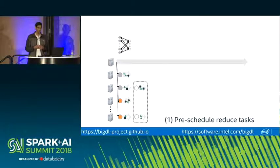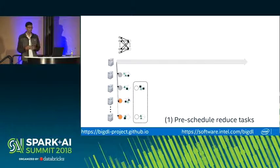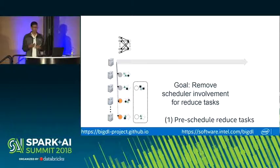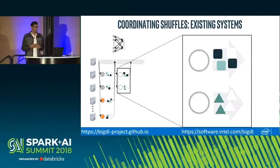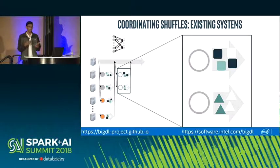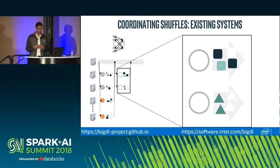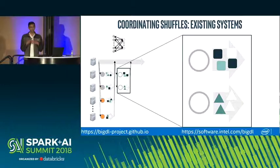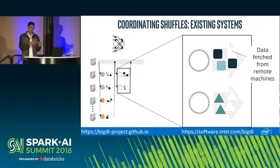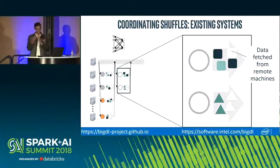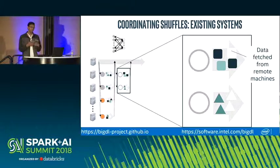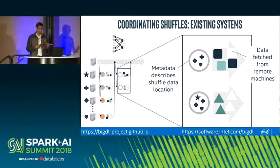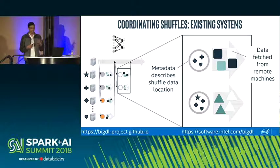Pre-scheduling reduce tasks breaks the barrier between map and reduce stages. In the current Spark approach, when map and reduce stages exchange data, map outputs are written to local disk and metadata about size and location is sent back to the centralized driver. The scheduler then provides reducers with metadata on where to fetch their inputs. The master node is not involved in actual data transfer — only the metadata flows through it.